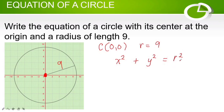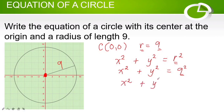To solve for the equation of the circle, we will replace the variable r with the given value, which is 9. So this becomes x squared plus y squared is equal to 9 squared. Simplifying, we have x squared plus y squared is equal to 81. This is the equation of the circle with center at the origin and a radius of length 9.